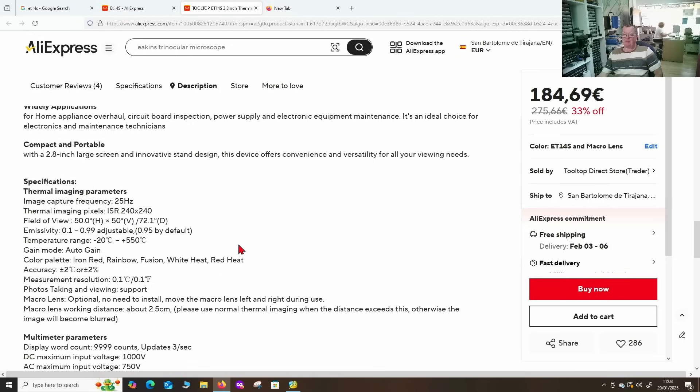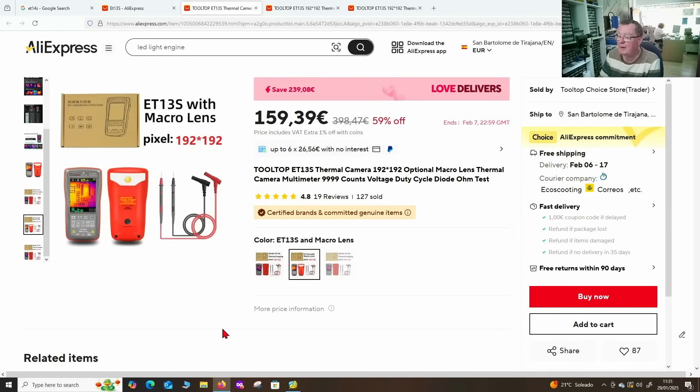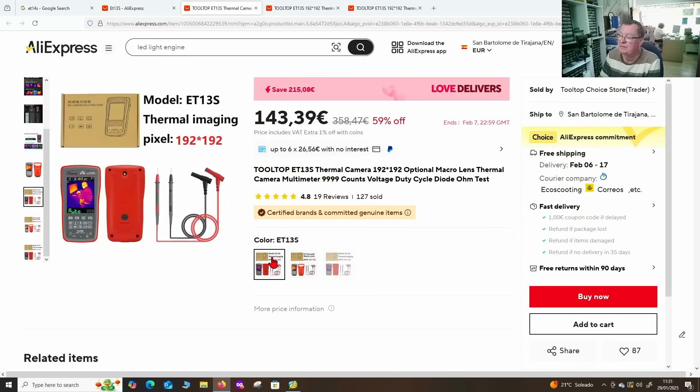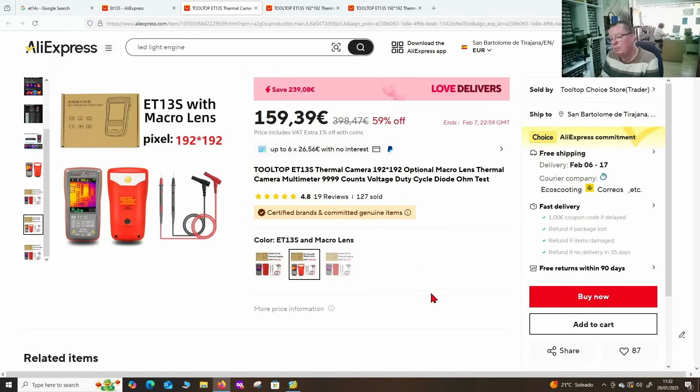And there's the specifications. It also mentions the macro lens works at about 2.5 centimeters. So that should be good for looking at PCBs. And by comparison, the ET-13S, 143 without the macro lens, 160 basically with the macro lens. So the ET-14S is a little more expensive, but not greatly so. Let's try it out.